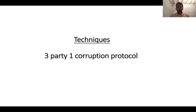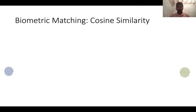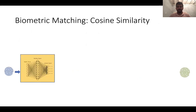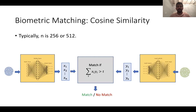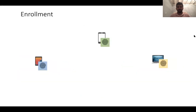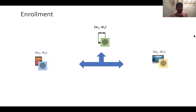Now let me get into details of the techniques behind our three-party protocol. How does the biometric matching work in the case of cosine similarity? The distance function here is that the inner product between both vectors should be greater than some threshold d. The number of elements that you want to match is typically in the order of 256 or 512. Since we have just three parties, let's say n is 3 for simplicity. In the enrollment phase, we just secret share the template and the signing key.